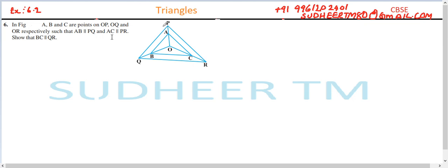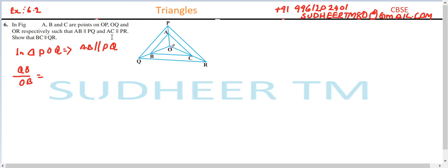So the diagram is given here. In triangle POQ, it is given that AB is parallel to PQ. So in triangle POQ, by Thales' theorem, we can write: QB divided by OB is equal to PA divided by AO. Let this be equation number one.